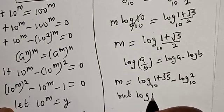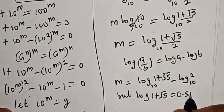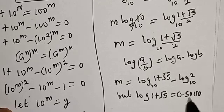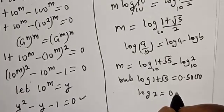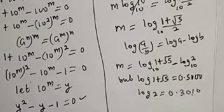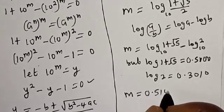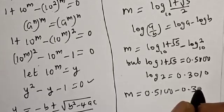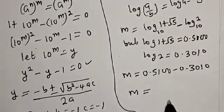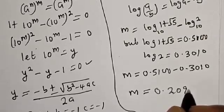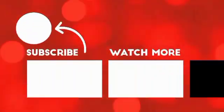Now, log(1 plus root 5) is approximately 0.5100 and log 2 is equal to 0.3010. Therefore m equals 0.5100 minus 0.3010, so m equals 0.209. This is the final answer. Before you leave, like, share, comment and subscribe. Thank you, bye bye.